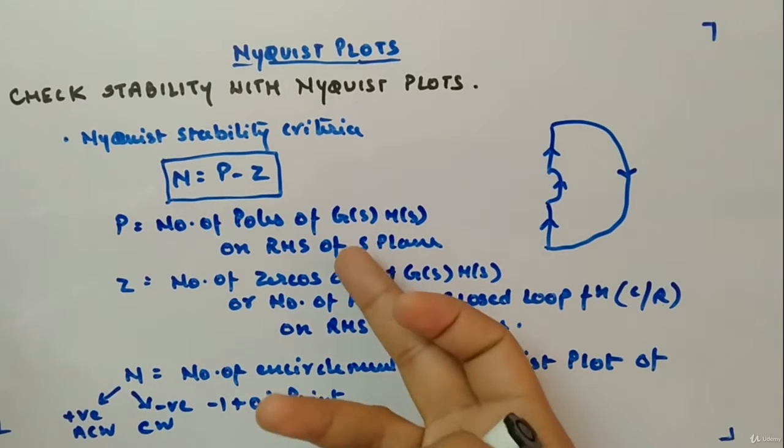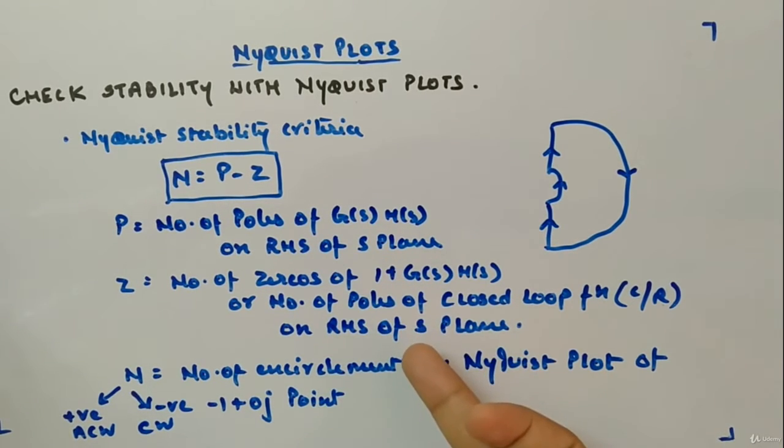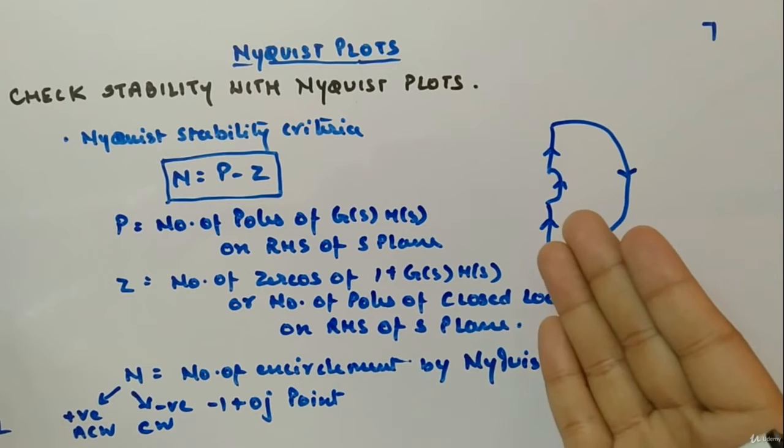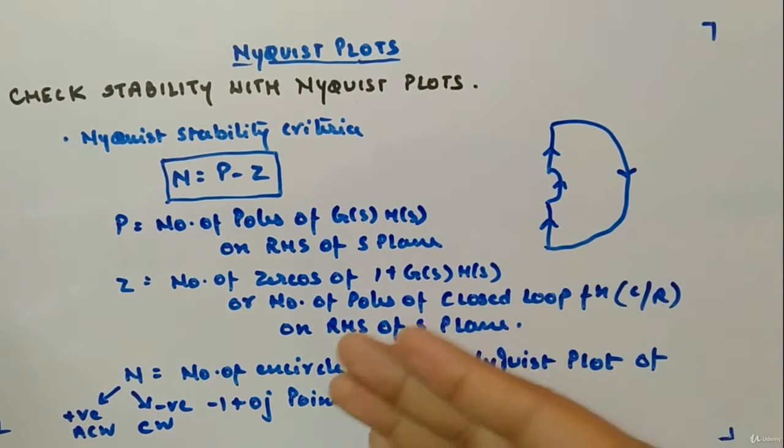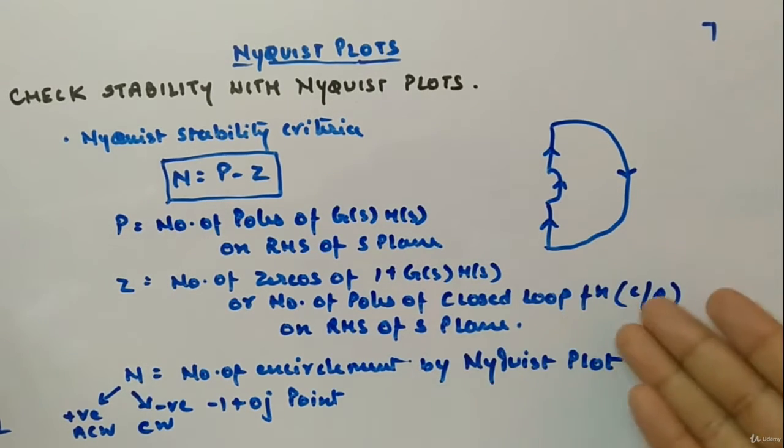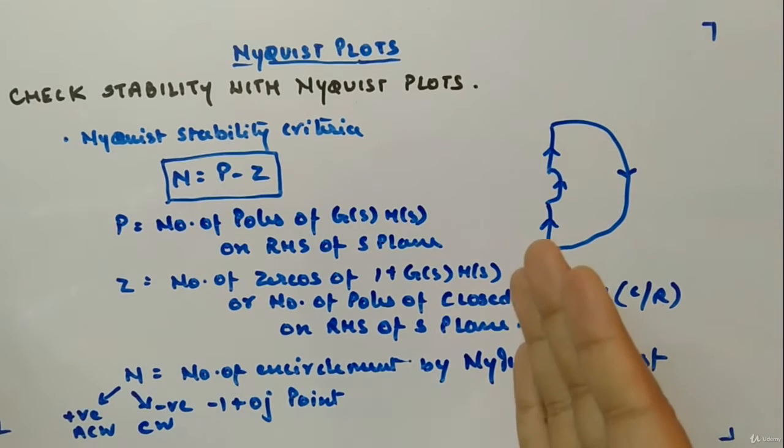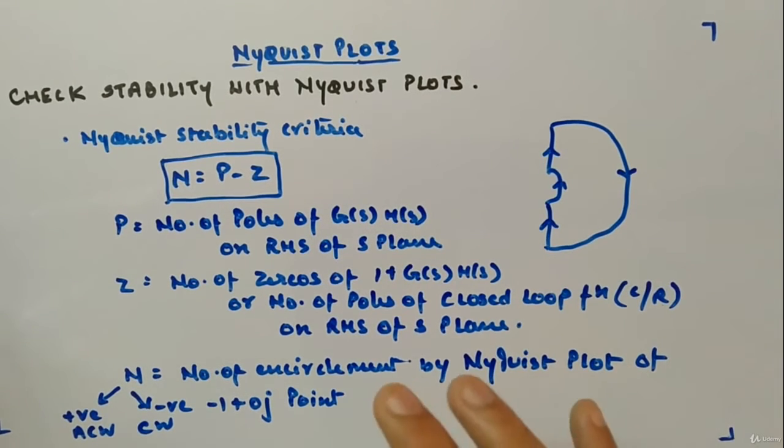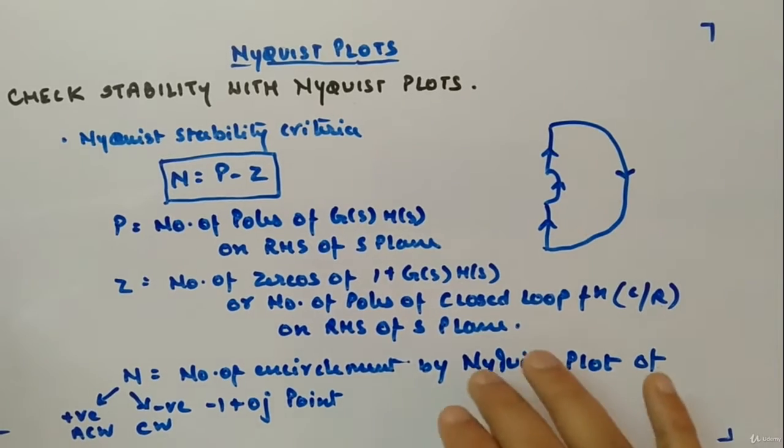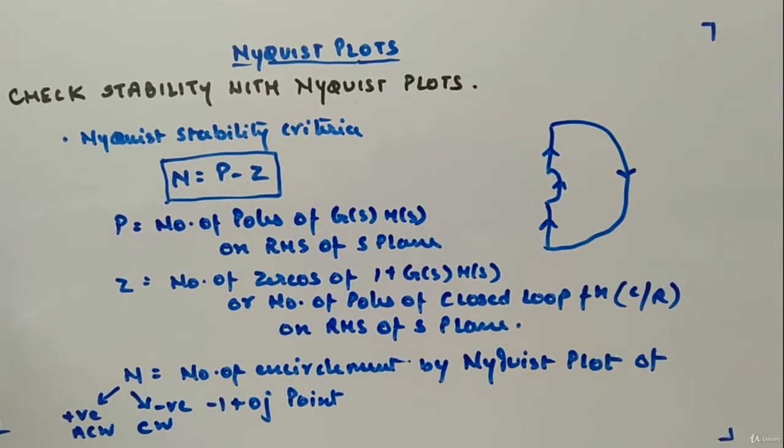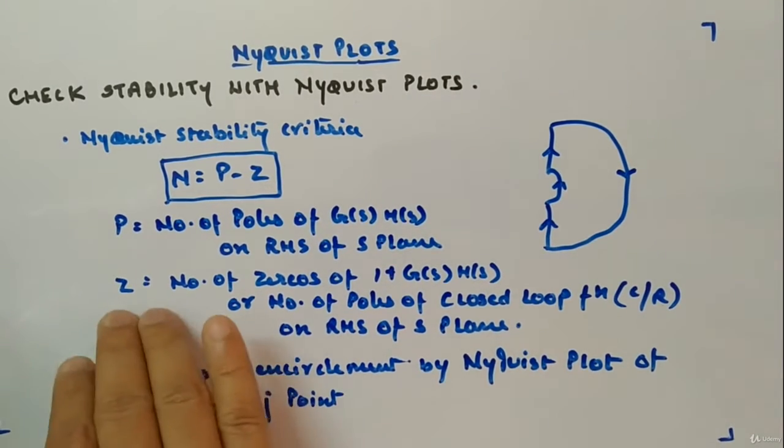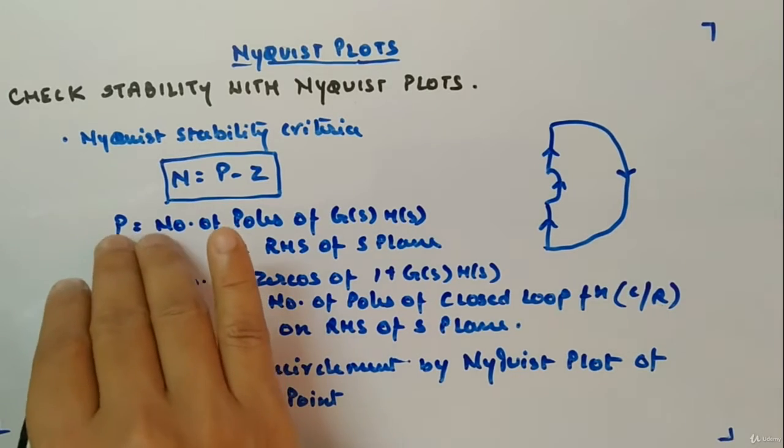Why are we counting on the right hand side of s-plane? Because the number of poles for the closed loop transfer function in the right hand side will directly tell us whether the system is stable or not. That's the reason we are looking for right hand side of s-plane.